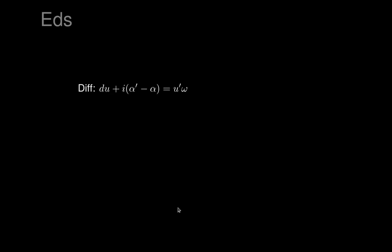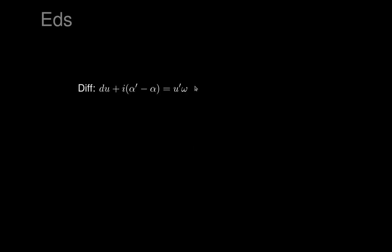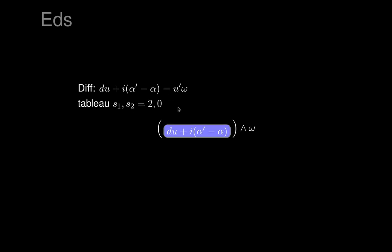If you differentiate the exterior differential system — which says omega prime equals E to the minus U times omega — you find that du plus i times (alpha prime minus alpha) equals some complex multiple U prime of omega. So it's just this expression that arises from differentiating the generator for some complex number U prime. We can write that as a tableau: when we take the exterior derivative of the one-form that generated the exterior differential system, we find exactly this two-form. It's a one-by-one complex matrix.